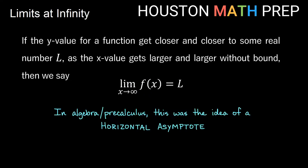The way that we interpreted this idea in algebra or a pre-calculus class was the idea of a horizontal asymptote — the idea that as I move to the right on a graph forever, I get closer and closer to some horizontal line, some y value. We called that a horizontal asymptote before.